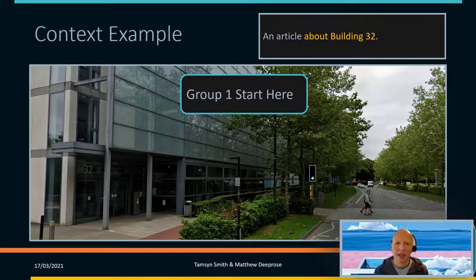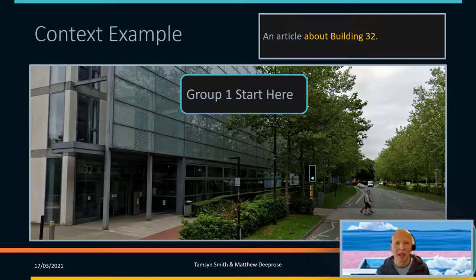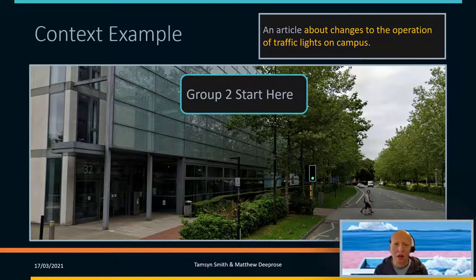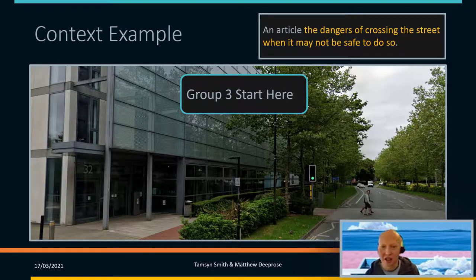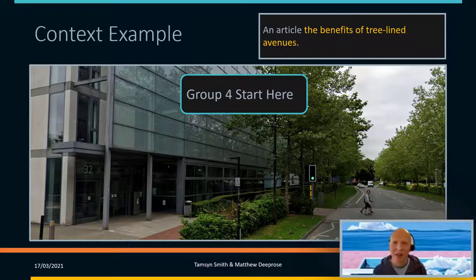We're going to do another exercise looking at this picture in different contexts. Group one considers an article about building 32; group two considers an article about changes to the operation of traffic lights; group three considers the dangers of crossing the street when it might not be safe; or the benefits of tree-lined avenues. You can continue to other contexts after your assigned one.